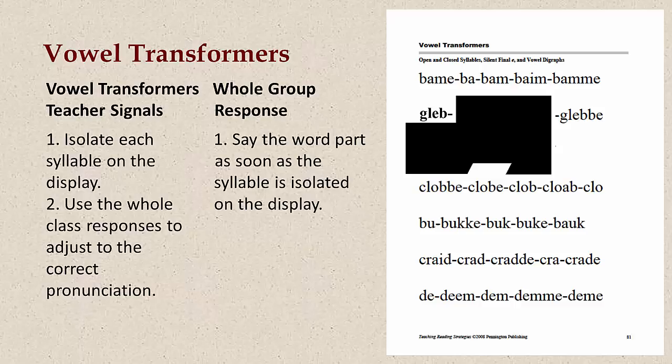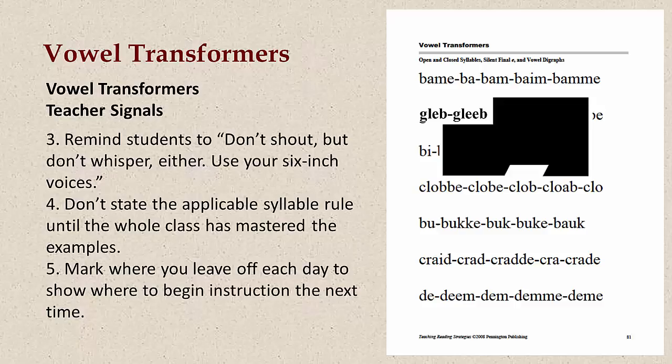Follow these directions to teach the vowel transformers. Number one: isolate each syllable on the display — students say the word part as soon as the syllable is isolated. Number two: use the whole-class responses to adjust to the correct pronunciation. Number three: remind students to use their six-inch voices — don't shout, but don't whisper either. Number four: don't state the applicable syllable rule until the whole class has mastered the examples. Number five: mark where you leave off each day to show where to begin instruction the next time.